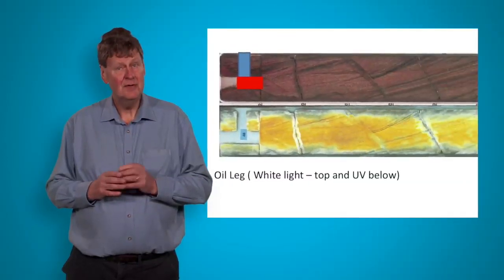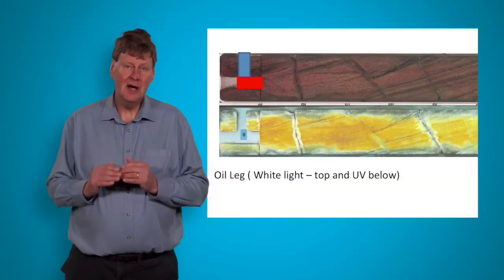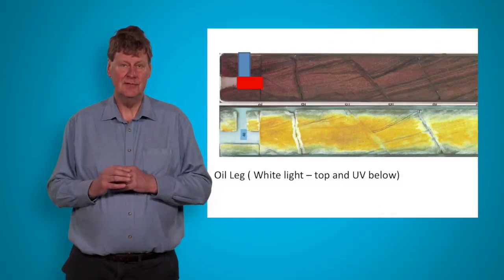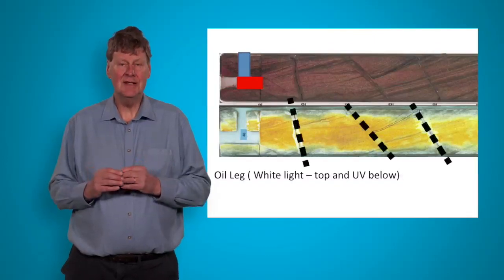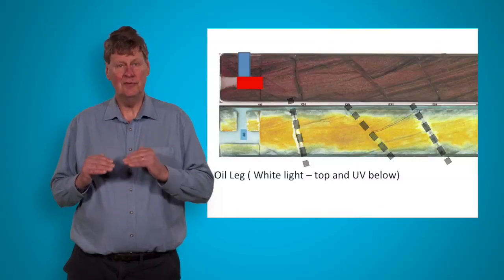Core plugs in a horizontal well. This slab is shown in white light and ultraviolet light, and under ultraviolet light, oil fluoresces. In this example, you can clearly see that the horizontal well is intersecting more faults and fractures.